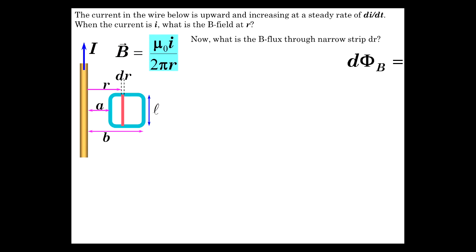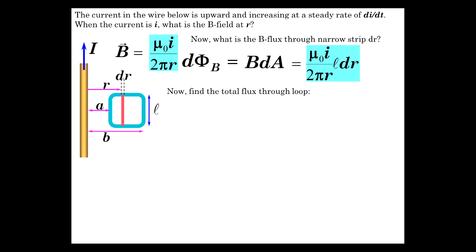That's the formula for the magnetic field from a current carrying conductor. What's the flux through the narrow strip? Well, the flux is that B field times dA. So μ₀I over 2πR dA is just dr times L, L dr. So there's the answer.